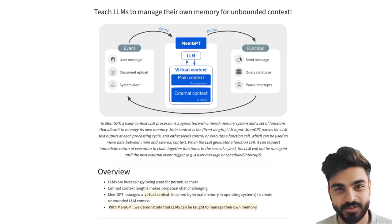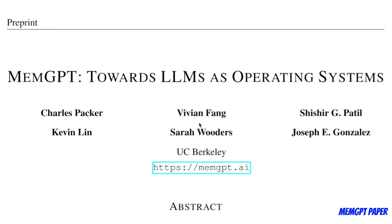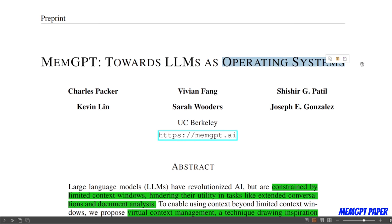So let's get started. First, we will look at a high-level overview of the system, and then I'll show you how to run this locally on your own machine. The paper is called MemoryGPT: Towards LLM as Operating Systems. If you are interested in learning more about it, the link is going to be in the description of the video.